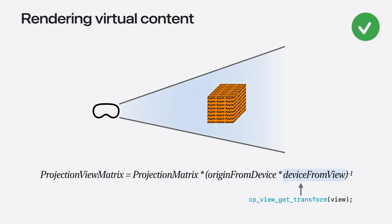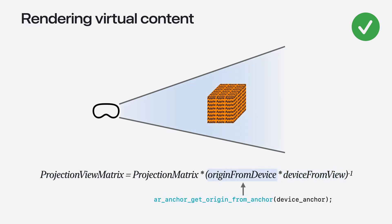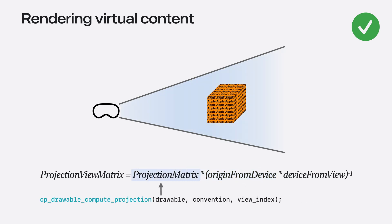The device from view transform is acquired by calling cp_view_get_transform in the Compositor Services API, which returns the matrix that brings the rendered view to the device space. For origin from device, the ARKit API provides this data when you call ar_anchor_get_origin_from_anchor. Now this year, for better positioning of rendered content with real world objects, you can acquire a scene-aware projection matrix. This matrix combines both camera intrinsics and real-time per-frame scene understanding factors to improve the experience in mixed immersion by better placement of rendered content with real world objects. If an application requests mixed immersion through Compositor Services, it must use this new API.